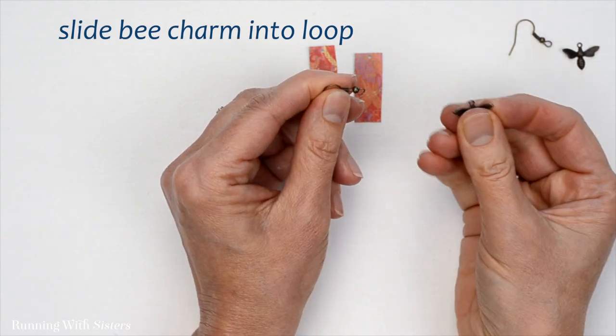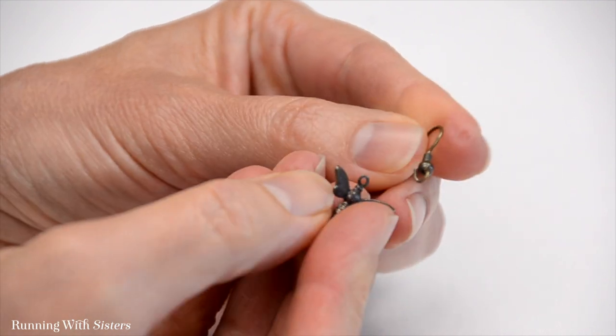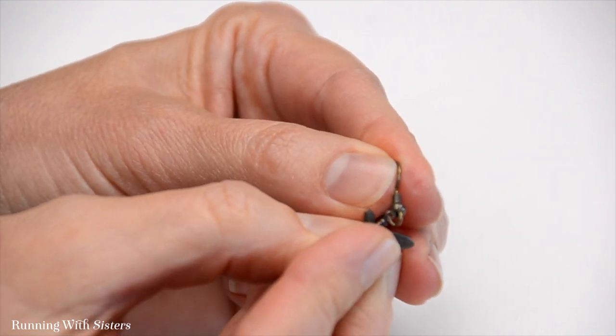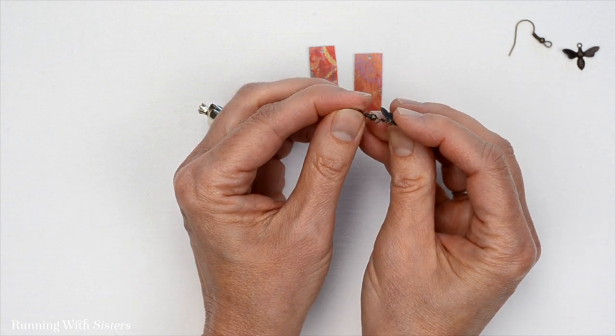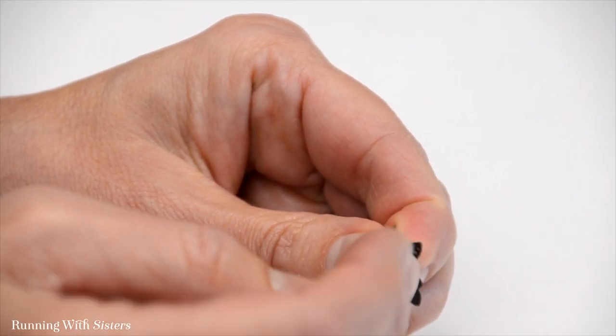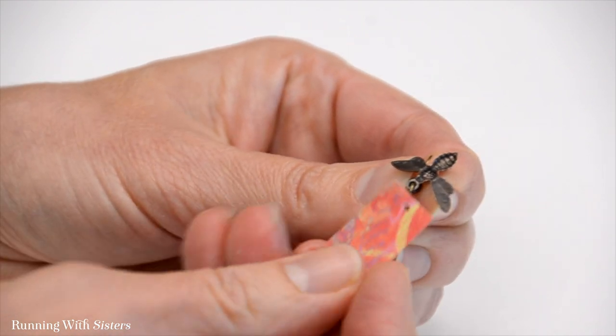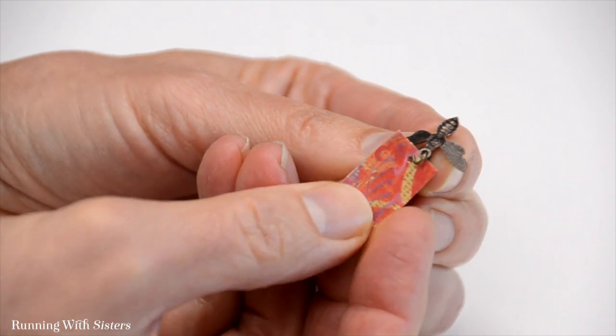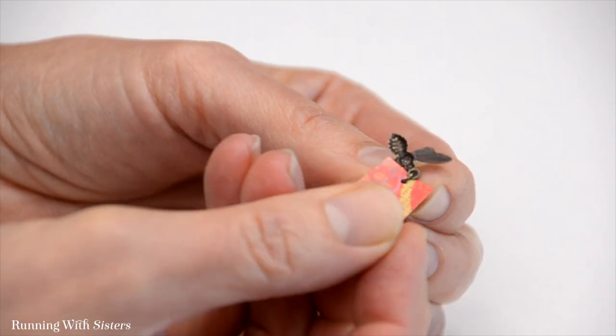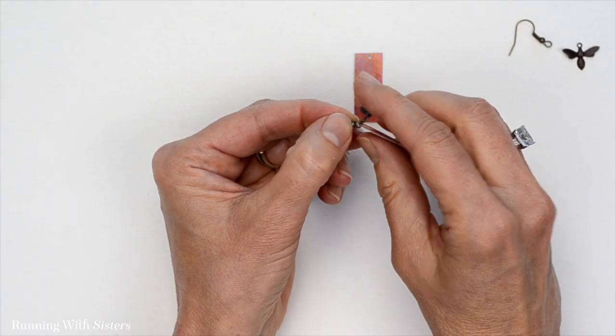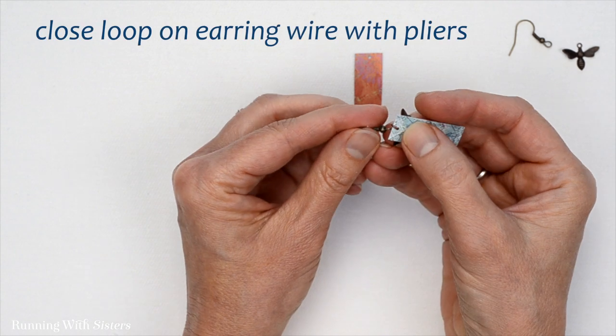Now I'm going to slide my bee charm on. I want the bee charm facing this way, so I'm going to feed it on that way like that. That way it'll face forward with the paper behind it. I'm just going to get the bee charm out of the way and take one of my pieces of paper here. I want it facing forward also, so I'm just going to slide it like that onto my loop. There we go. Now see the bee charm is going to sit on top of it. Now I want to close that loop again.